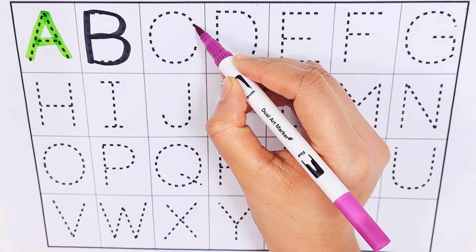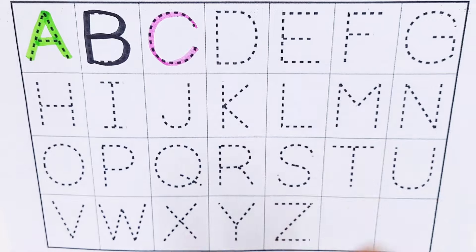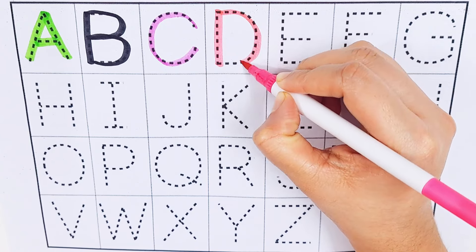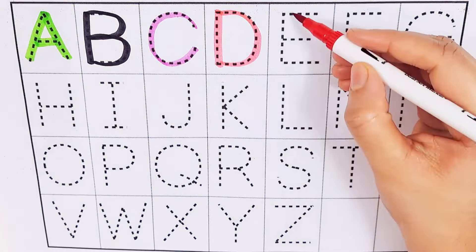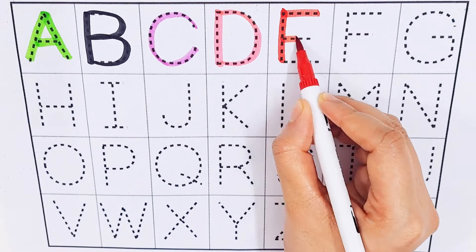Violet color. C, C for cherry. Pink color. D, D for door. Red color. E, E for egg.